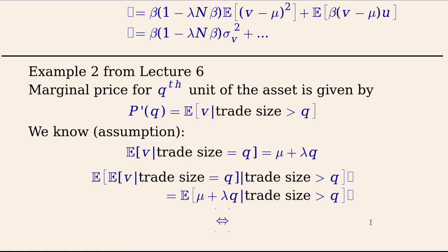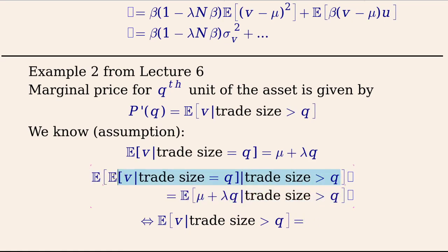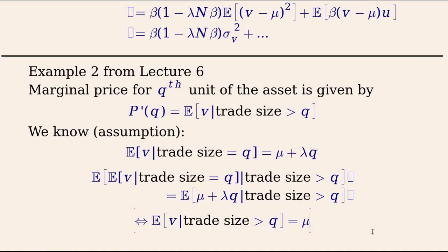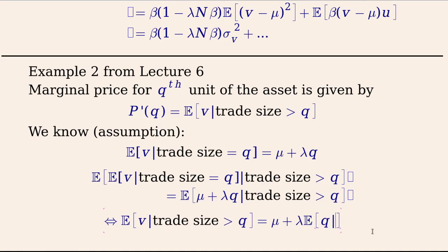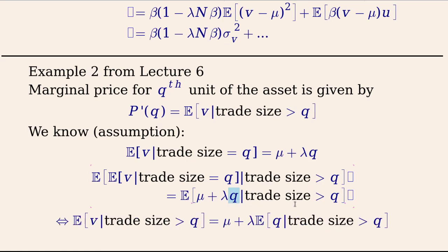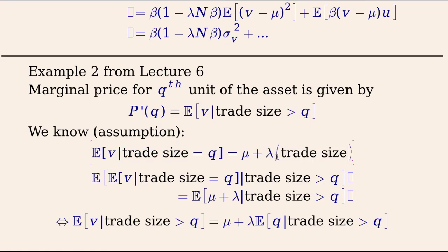We need to distinguish carefully: in the price impact equation, Q denotes total trade size, not just the marginal unit. So the expression becomes E[V | trade size ≥ Q] = μ + λ · E[trade size | trade size ≥ Q]. We find this conditional expectation by integrating trade size against the conditional density of trade sizes given they are larger than Q.